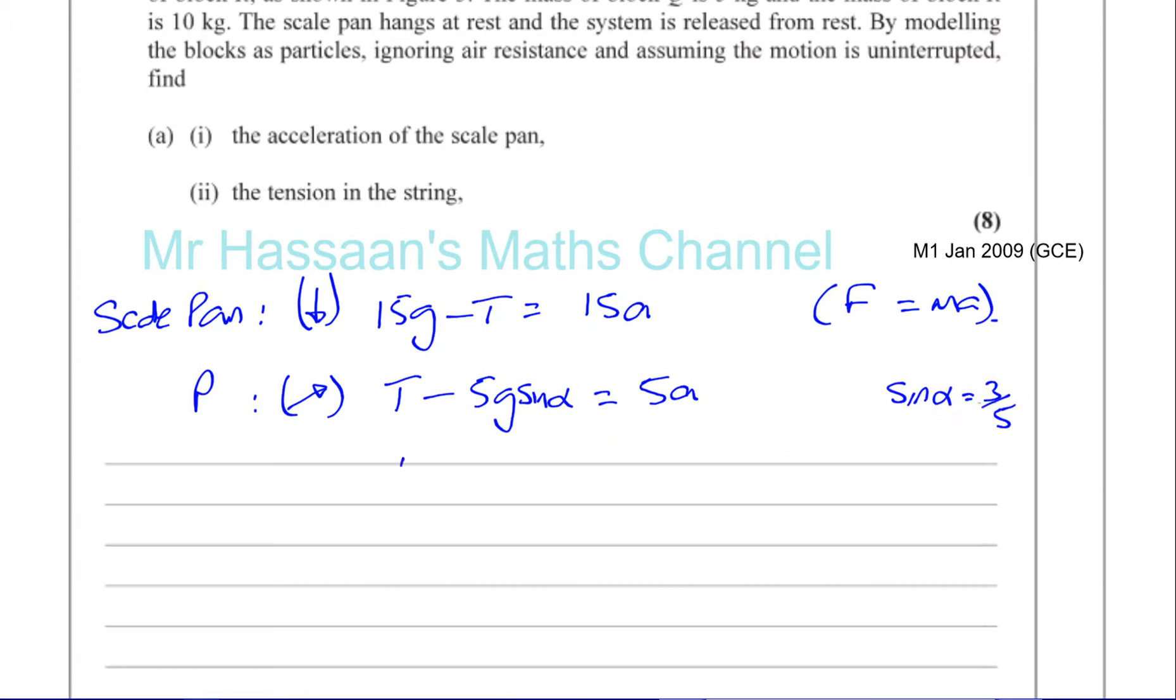So I can say this is T minus 5g times 3 fifths equals 5a. The 5 cancels, so T minus 3g equals 5a. Let me call this equation 1 and let me call this equation 2.